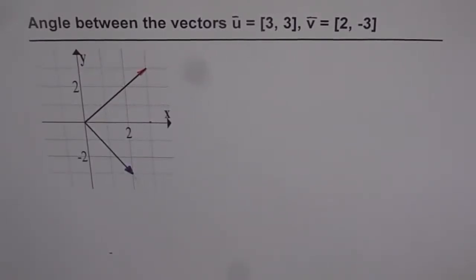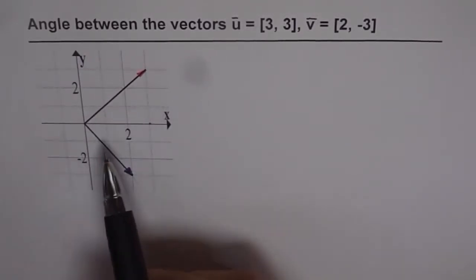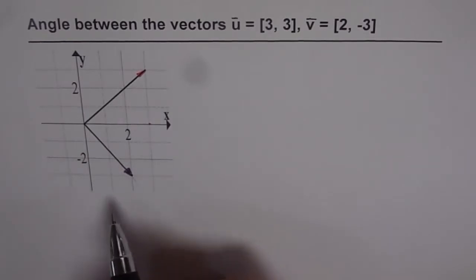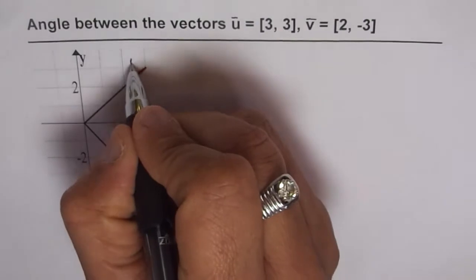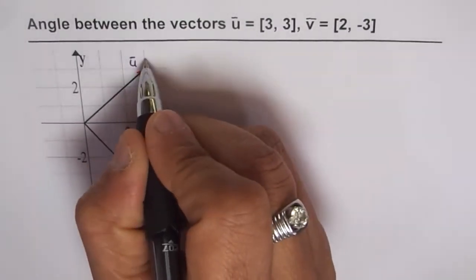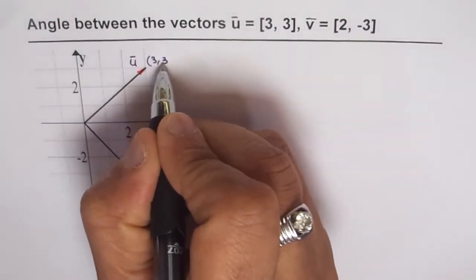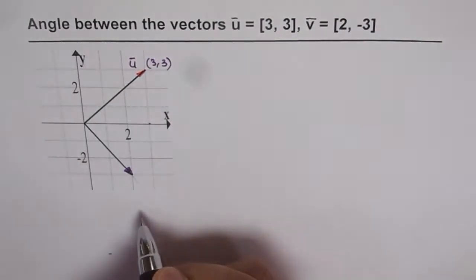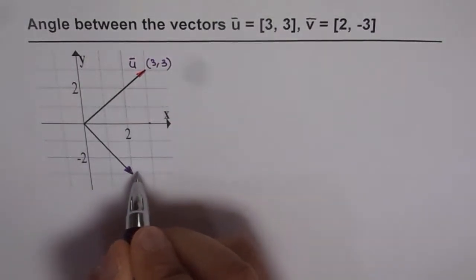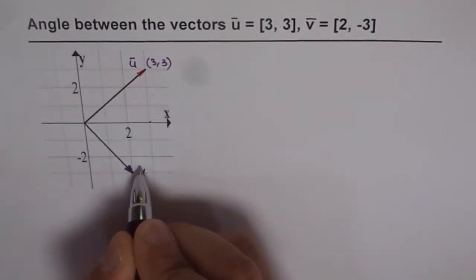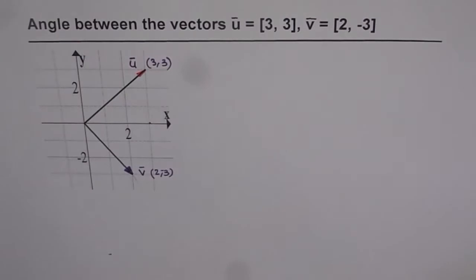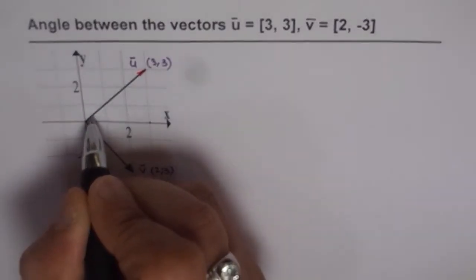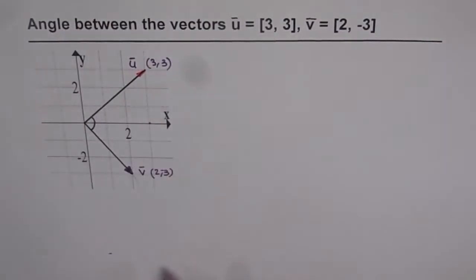Angle between the vectors u and v. Here we are given two vectors u and v. The vector u is (3, 3), which is this vector here. And vector v is (2, -3). So this is vector v for us, at position (2, -3). Now we need to find the angle between them, the angle between u and v.